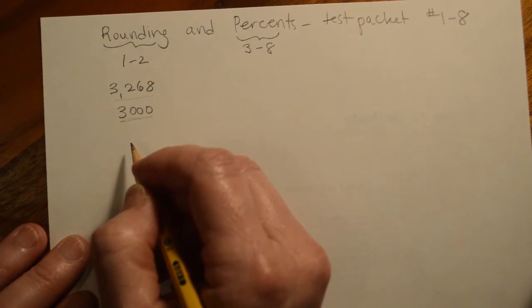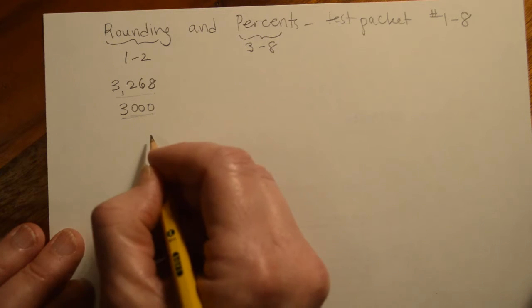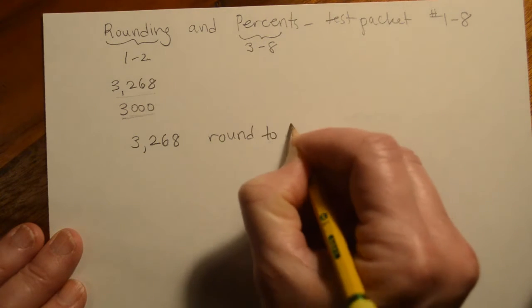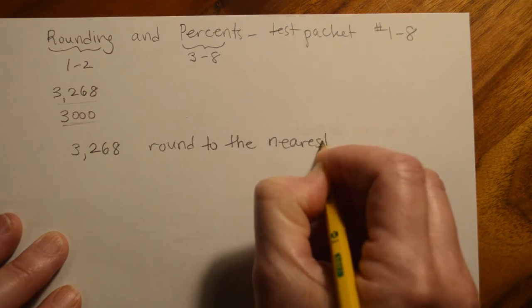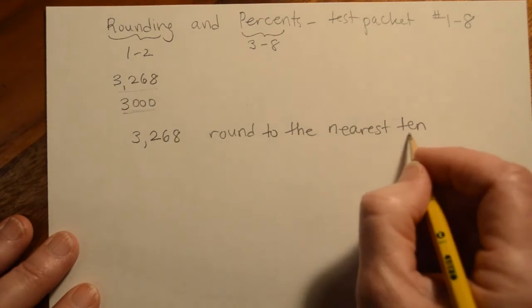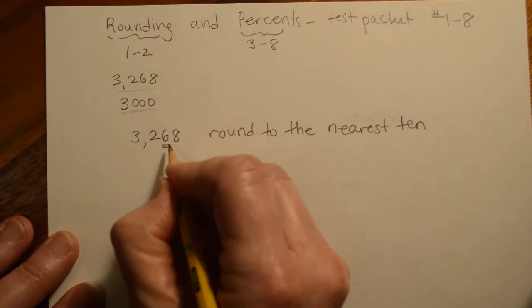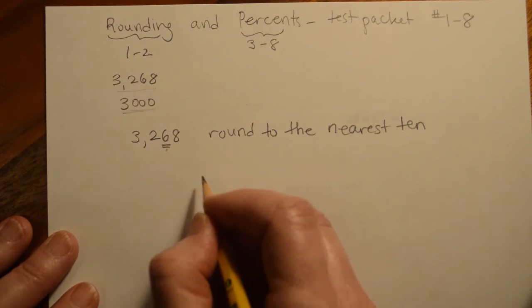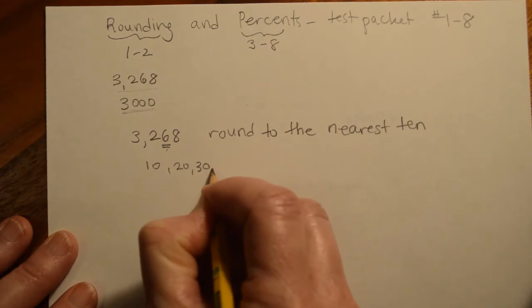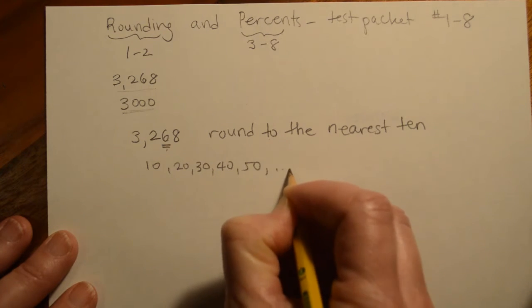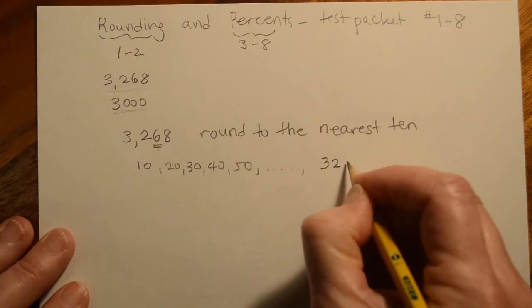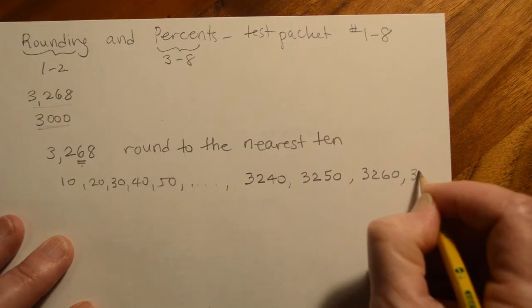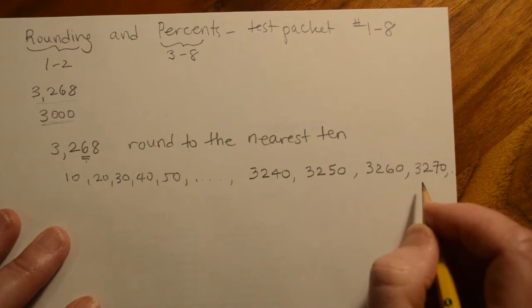So what they might say when you round is they might give you a number like 3,268 and they might say round to the nearest 10. And so when they say 10, we come over to the tens place, and that means that we want to say, what is the closest 10 to 3,268? Now, when we count by tens, we would say 10, 20, 30, 40, 50, and so forth until we got up to 3,240, 3,250, 3,260, 3,270, and so forth.